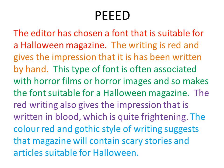Here's an example. Point: the editor has chosen a font that is suitable for a Halloween magazine. Evidence: the writing is red and gives the impression that it has been written by hand. Explanation: this type of font is often associated with horror films or horror images, and so makes the font suitable for a Halloween magazine. That's about a D grade. To go higher, we explore further: the red writing also gives the impression that it is written in blood, which is quite frightening and makes you think of a horror story. Deeper thinking: the colour red and gothic style of writing suggests that the magazine will contain scary stories and articles suitable for Halloween. That's a high grade answer.